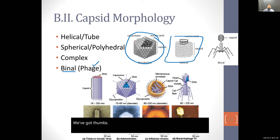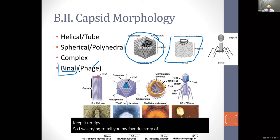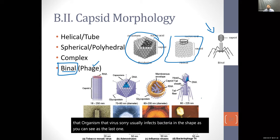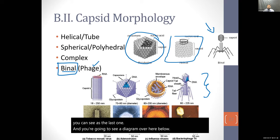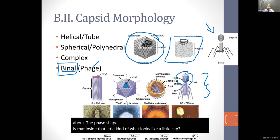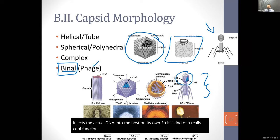The shape called a phage — also known as a bacteriophage — usually implies the virus infects bacteria. The shape looks like a lunar lander, which has actually been a source of inspiration for engineering structures. What's really cool is that inside the cap-like head is where it stores its genetic material, and the rest of the body lands on, detects, and injects the actual DNA into the host on its own.